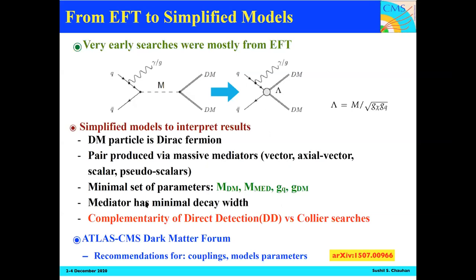There is a dark matter forum — a combined ATLAS and CMS forum — which provides recommendations for what parameters to use and how to compare results with other experiments, documented in an archive paper.